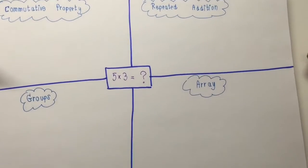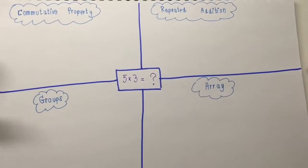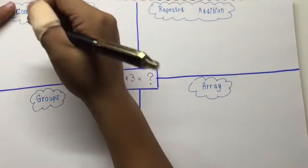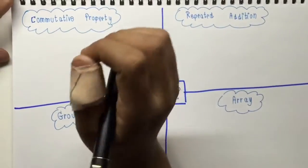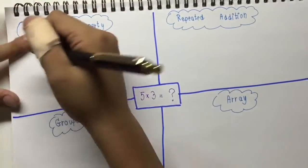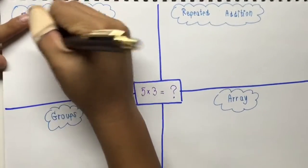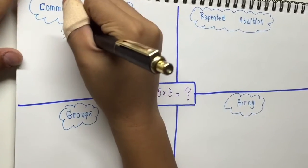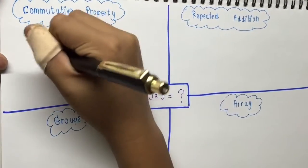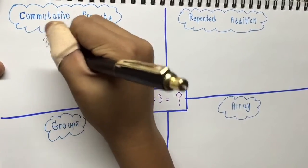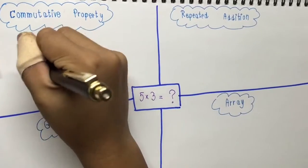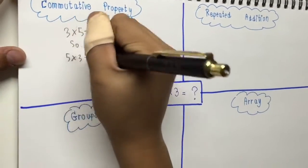This is the mental strategy of multiplication. The commutative property is the family fact. So 3 times 5 equals 15, and 5 times 3 equals 15.